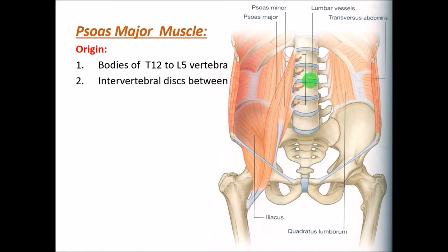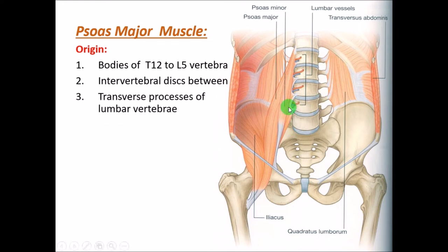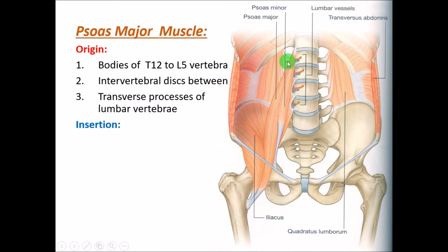The psoas major also originates from the intervertebral discs between these vertebrae — the blue-colored structures shown here — and from the transverse processes of the lumbar vertebrae. So the origin is from the bodies of six vertebrae (T12–L5), the transverse processes of the lumbar vertebrae, and the intervertebral discs between them. This gives it a large origin.